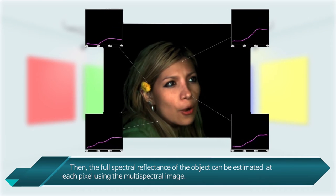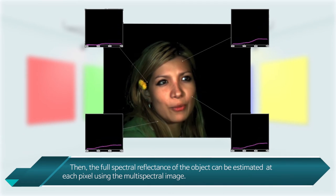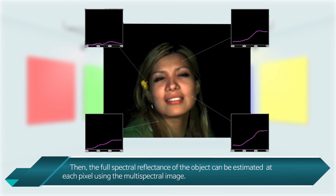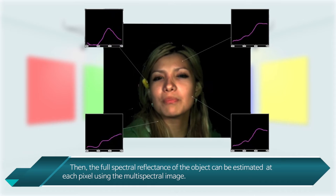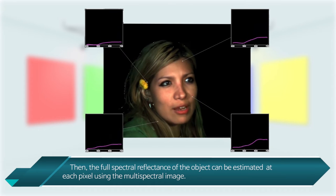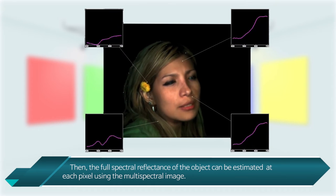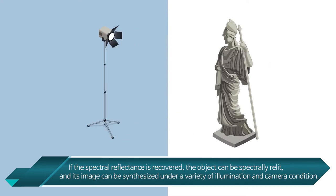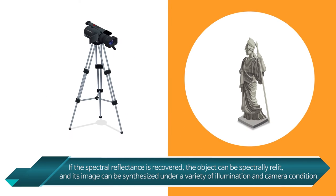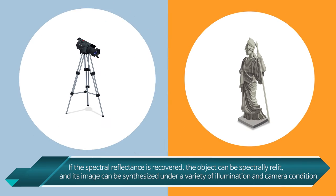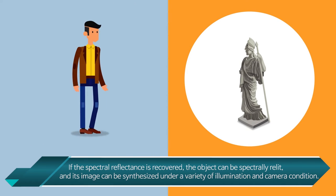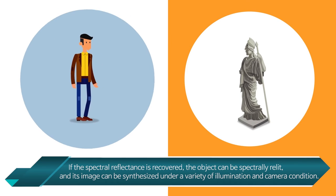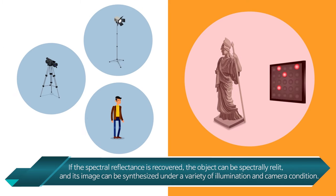Then, the full spectral reflectance of an object can be estimated at each pixel using the multispectral image. If the spectral reflectance is recovered, the object can be spectrally relit, and its image can be synthesized under a variety of illumination and camera conditions.